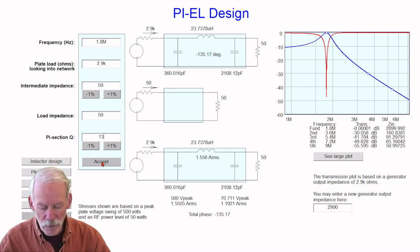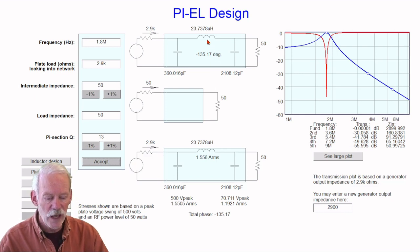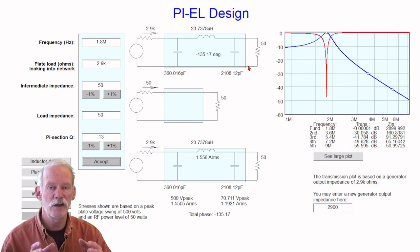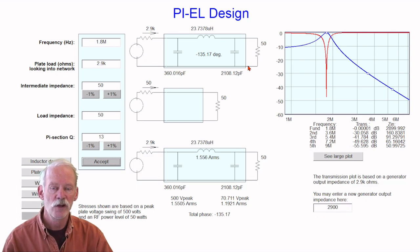So I've plugged all these numbers in here, and I'll click Accept, and it gives me an inductance of 23.7 microhenries, a tuning capacitance of 360 puff, and a load capacitance of 2108 puff. So I can use this to adjust my values in my circuit. Now remember, in a pi network, you'll also want to have considerably more loading capacitance than what's specified here, so that when you're tuning your transmitter, you can start out with a larger loading capacitor than you need in order to minimize your antenna current on tune-up.